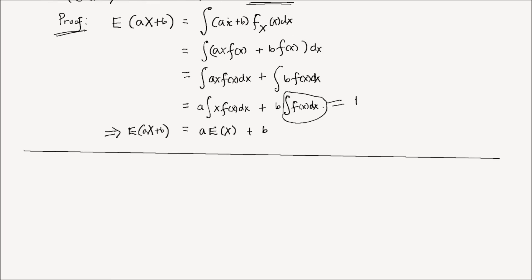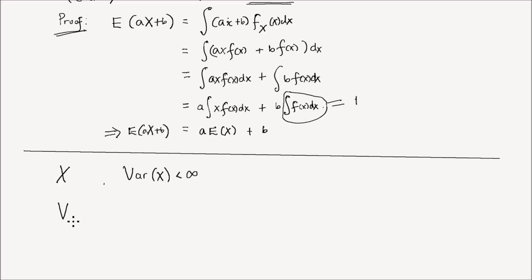What about the variance of a linear function of a random variable x? Consider a random variable x with a finite variance, and two constants a and b in the real number system. The variance of a·x + b is equal to a squared times the variance of x.